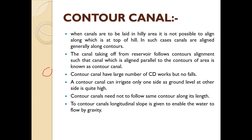A contour canal can irrigate only one side of the ground, as the other side is quite high. We can think of contour lines as representing hills — the canal passes along one contour. On the higher side it is not possible to irrigate, but on the lower side it is easy to irrigate that particular area. The contour canal need not follow the same contour along its length; a longitudinal slope is given to enable water to flow by gravity, so it changes contours after some distance.